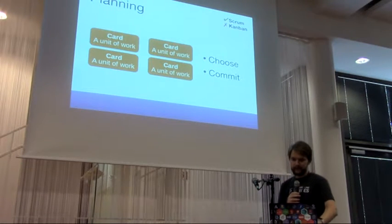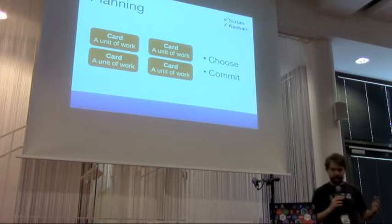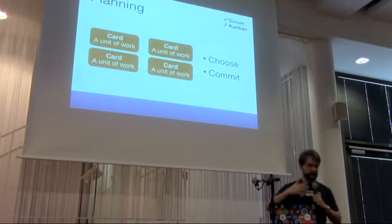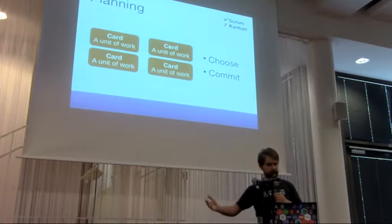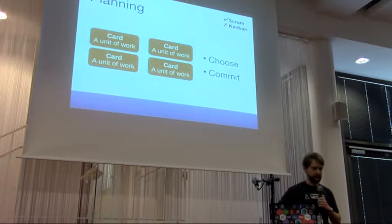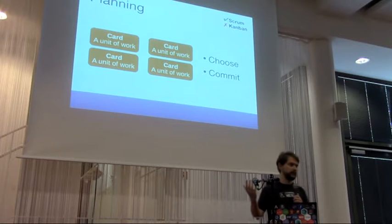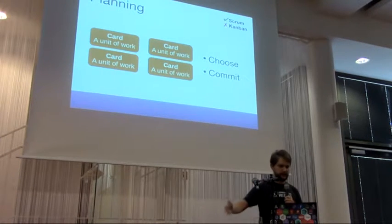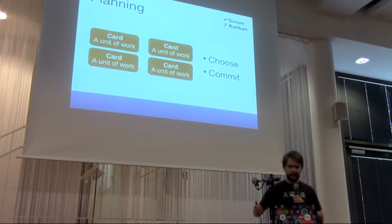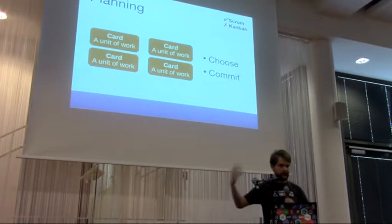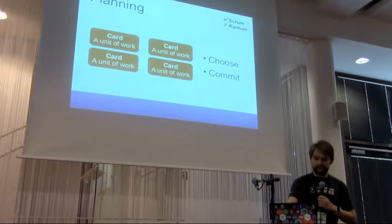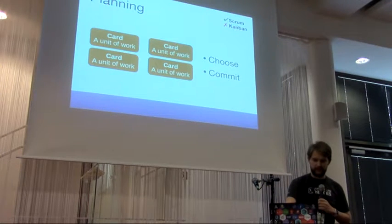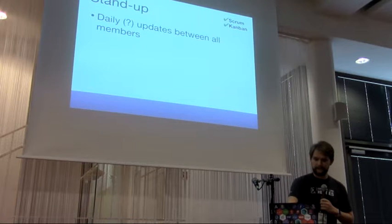Planning is specific to Scrum. Since Scrum uses cycles, like two-week sprints, you need to plan what you want to commit to for those cycles. For example, you say you want to complete these ten cards in this sprint, then you do your work. Kanban doesn't have planning because there are no cycles — you just go through the queue.